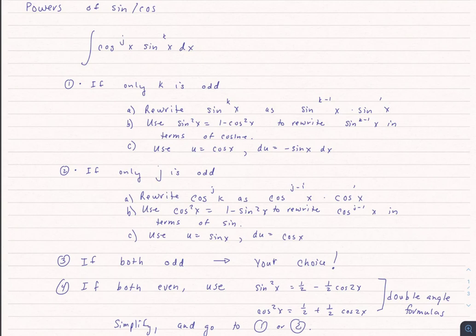If I have the integral cosine to the j power of x times sine to the k power of x dx, this is what we're going to do.